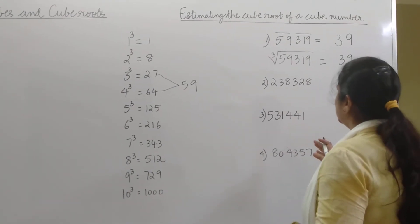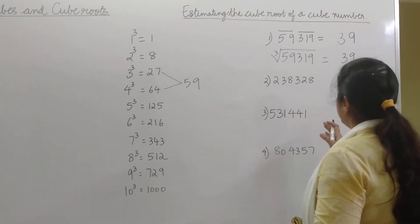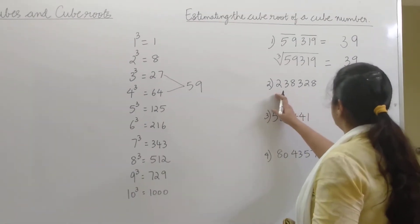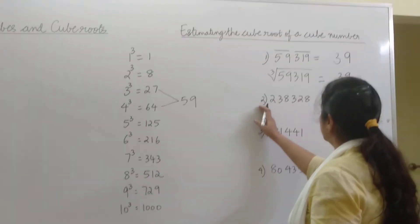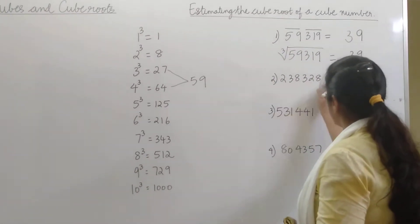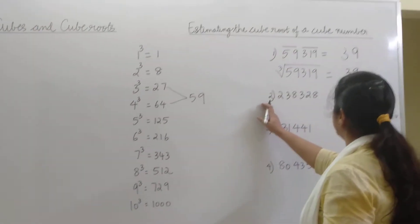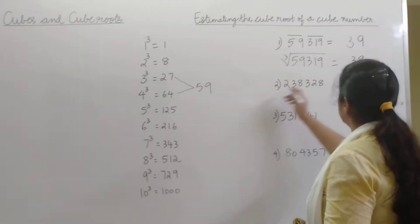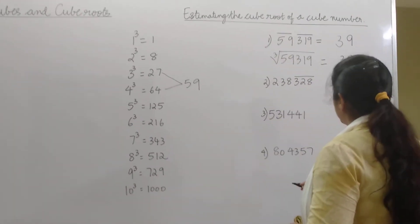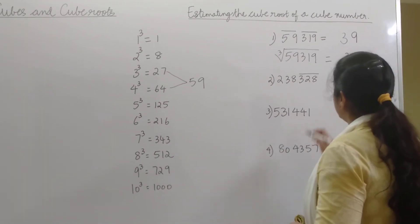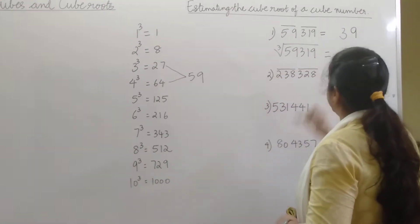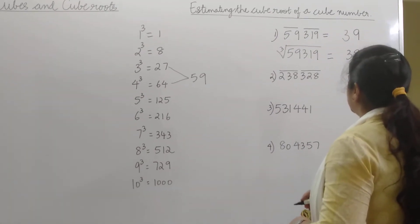How do we start? We need to group the digits in 3's from right to left. So 328 makes the first group, and 238 makes the second group.